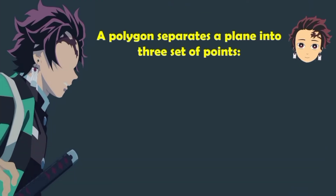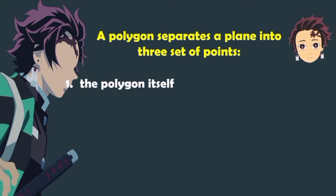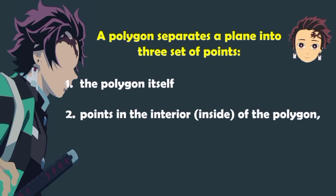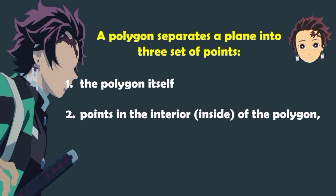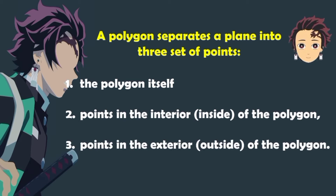A polygon separates a plane into three sets of points: first, the polygon itself; second, points in the interior or the inside of the polygon; and third, points in the exterior or outside of the polygon.